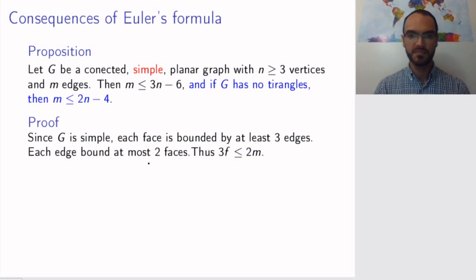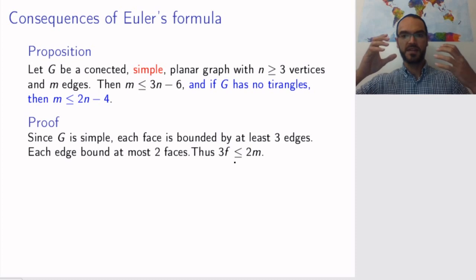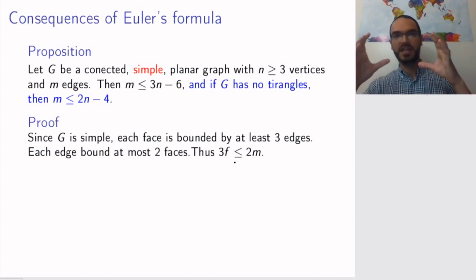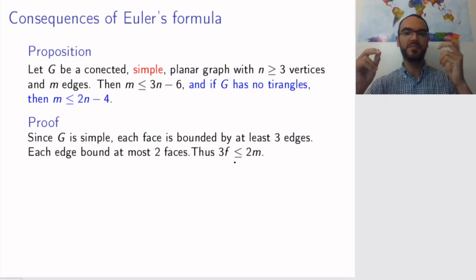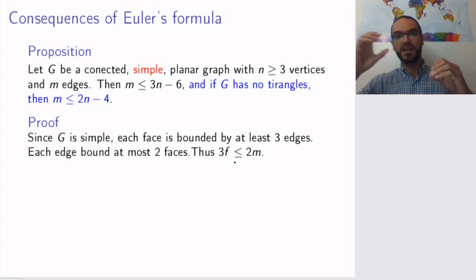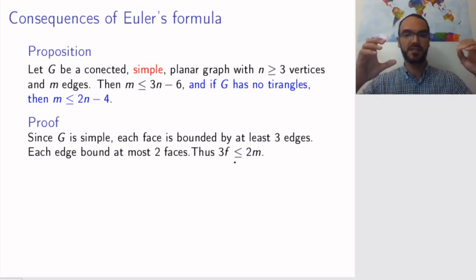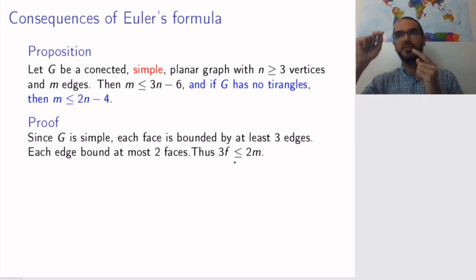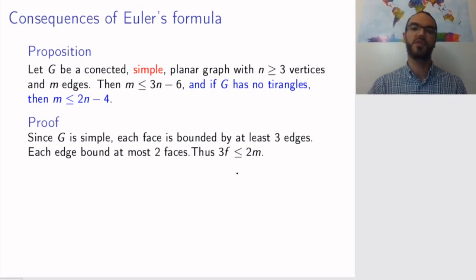So what does this mean? This means that if I take three times the number of faces, so each face is bounded by at least three edges. So I have to have at least, naively I would think that means that there must be at least three edges per face. So the number of edges has to be at least three times the number of faces. But each edge is counted multiple times. It's counted once for each face it bounds. And since this number is at most two, I have to adjust this at most double counting of edges by saying that 3f is smaller than or equal to 2m.